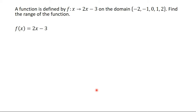A function is defined by f: x → 2x - 3 on the domain {-2, -1, 0, 1, 2}. Find the range. When a function is given in this form, we change f: x into f(x) and the arrow sign becomes an equal sign, giving us f(x) = 2x - 3. This is the rule of the function.